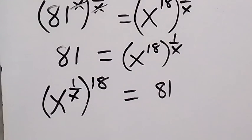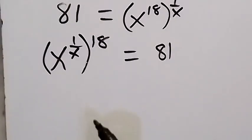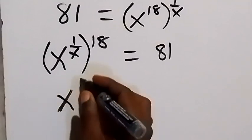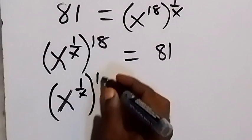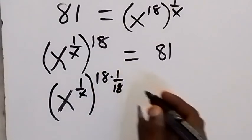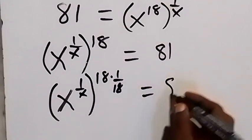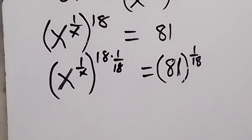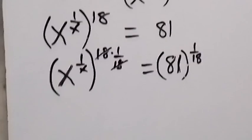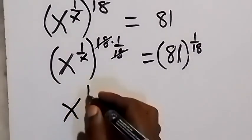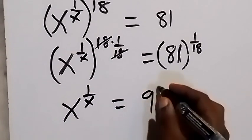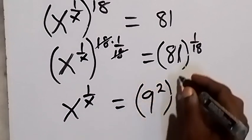81 can be expressed. Also, before that, let's multiply both powers by 1 over 18 so as to remove this power of 18. So we have x raised to power 1 over x, raised to power 18, then multiplied by 1 over 18. Also on this side, we multiply by 1 over 18 — that's 81 raised to power 1 over 18. From there, 18 cancels 18 on this side.